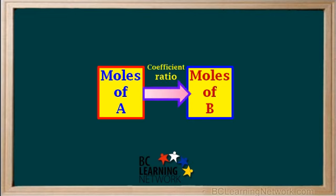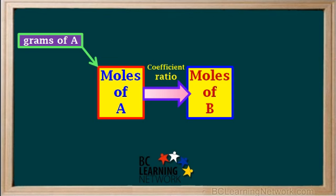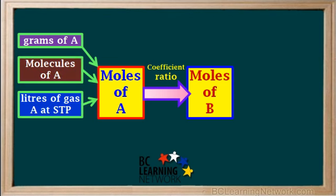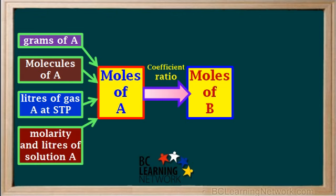The amount of substance A that we are given could be expressed as several different quantities. Whatever we are given, we must always convert it to moles. For example, we might be given the mass of A in grams, or the molecules of A. Or if A is a gas at STP, we might be given liters. Or if A is present as a solution, we might be given the molarity and liters of solution.